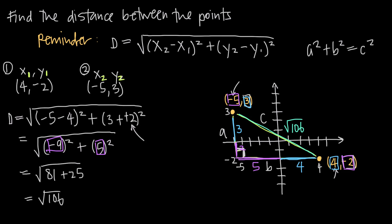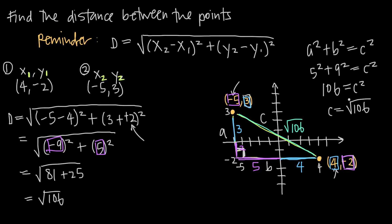Going back to the Pythagorean theorem: the length of side a is 5, so 5 squared; the length of side b is 9, so plus 9 squared, equals c squared. We get 25 plus 81, which is 106, equal to c squared. Taking the square root of both sides gives c equals the square root of 106. Since we're dealing with an actual length, a negative value makes no sense, so we take the positive square root — c equals square root of 106, matching our earlier result.